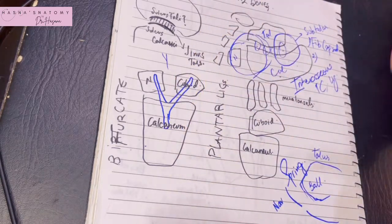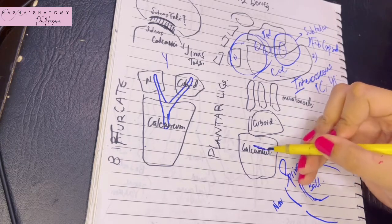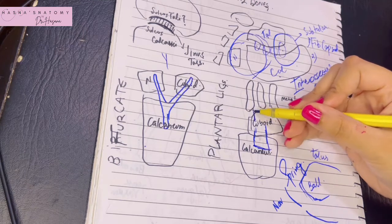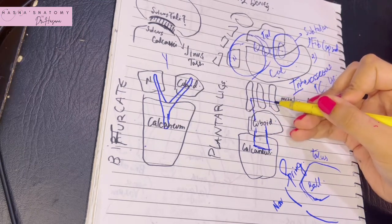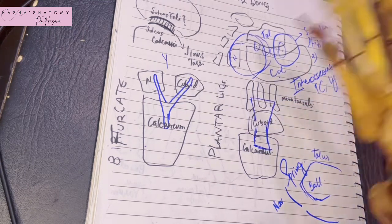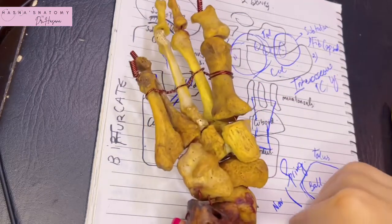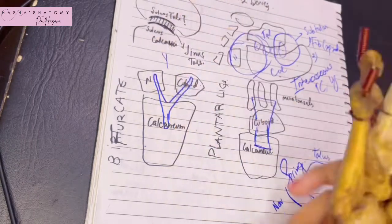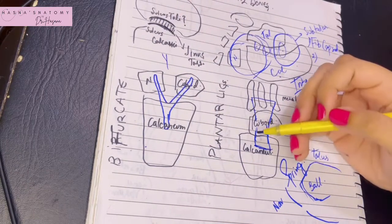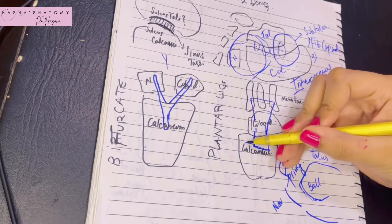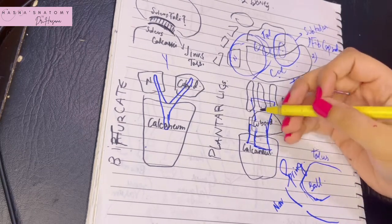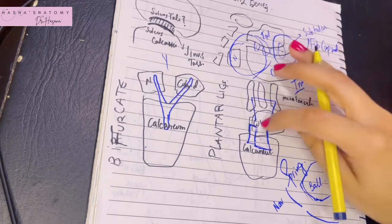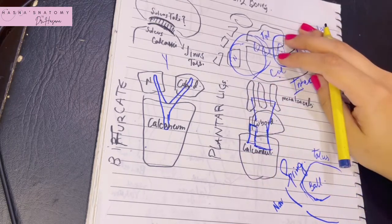The long plantar ligament runs from the calcaneus bone, attaches to the cuboid bone, and runs even further ahead to attach to the middle three metatarsal bones. Then we have the short plantar ligament, which only extends from the calcaneus to the cuboid and lies deep to the long plantar ligament.